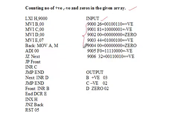We take inputs from memory locations starting at 9000. For example: 9000 has 26, 9001 has 81, 9002 has 00, and so on — like 44, 00, F0, 32. I'm randomly taking seven input numbers.